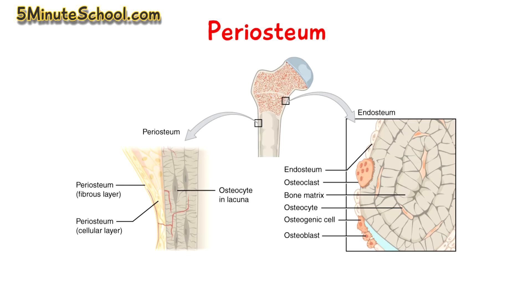The periosteum is a membrane which covers the outer surface of all bones, with the exception of the joints around the long bones. When we look at the structure of the periosteum, we have two layers: the outer fibrous layer and the inner osteogenic layer.